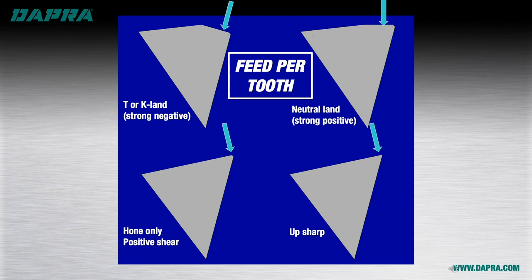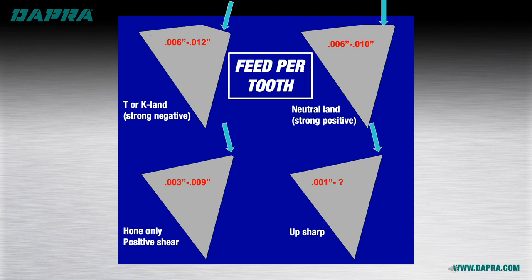For indexable tooling, each cutting edge has a recommended feed per tooth range, and good tool performance depends on running within that range. It's a common mistake to slow the feed down when running a long-reach tool, because slowing the feed rate may take the cutter below the range it's designed to operate in, causing rubbing or bouncing off the part surface rather than cutting properly. Instead, leave the feed rate where it is or even increase slightly, and reduce depth of cut to lower tool pressure.